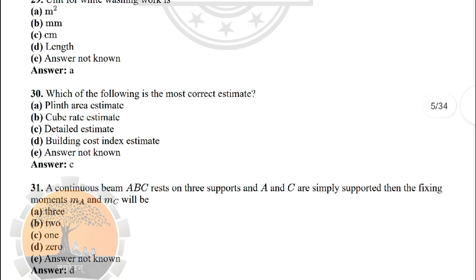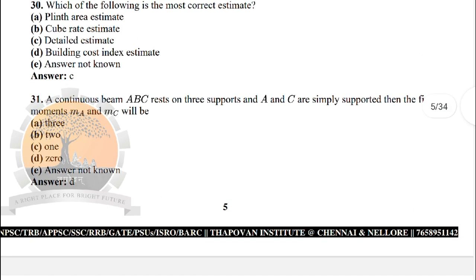Which of the following is the most correct estimate? — the correct answer is option C: detailed estimate. Next: in a continuous beam ABC resting on three supports, if A and C are simply supported, then fixing moments MA and MC will be — option D: zero.